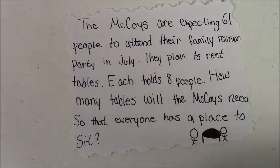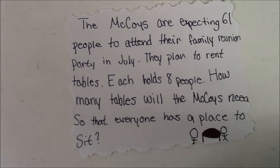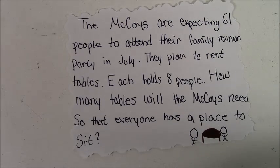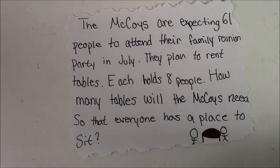The McCoys are expecting 61 people to attend their family reunion party in July. They plan to rent tables; each holds eight people. How many tables do the McCoys need so that everyone has a place to sit?